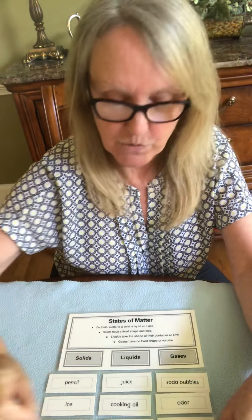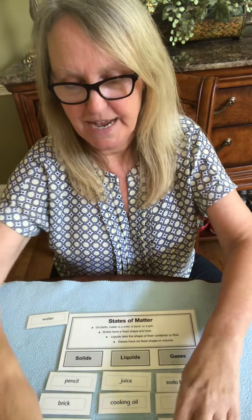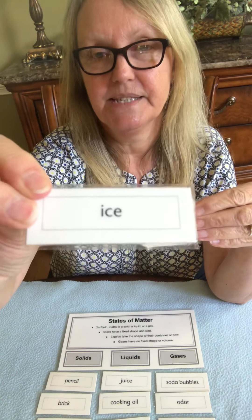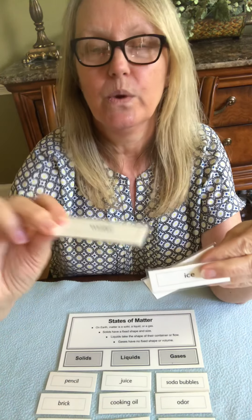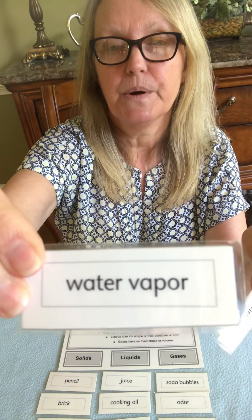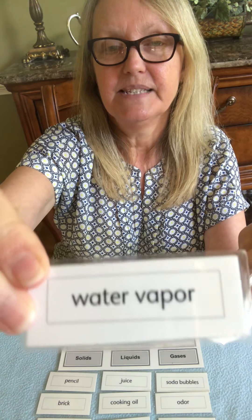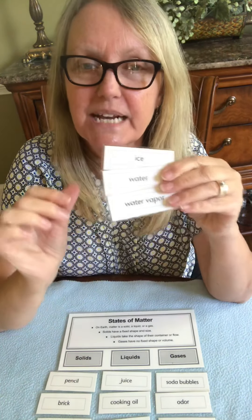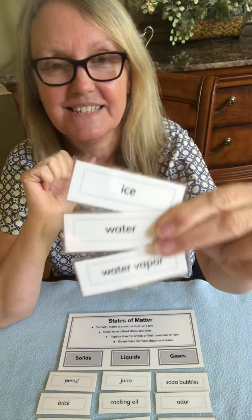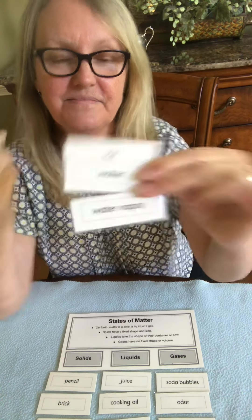There's one special set in here you might have figured out already. We have ice, which is water in its solid form; water, which is water in its regular liquid form; and water vapor, which is water in the state of a gas. Did you know that water is the only thing on earth that can be a solid, liquid, or gas at the same time? That's pretty interesting.